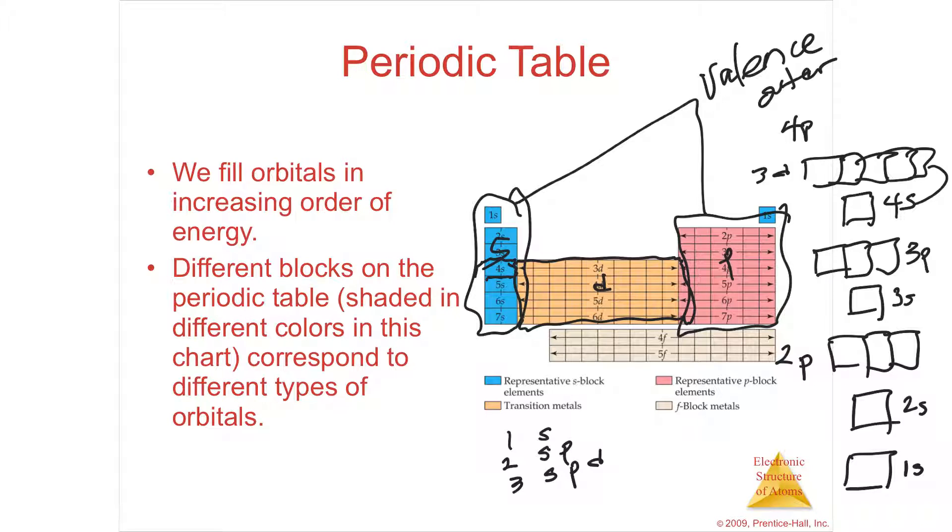The Fs start 4F, this is 4F, but you don't see 4F until after 6S. So the 6S fills, then the 4Fs start to fill. So it's a little bizarre, but you can look at these and see where they are at all points.